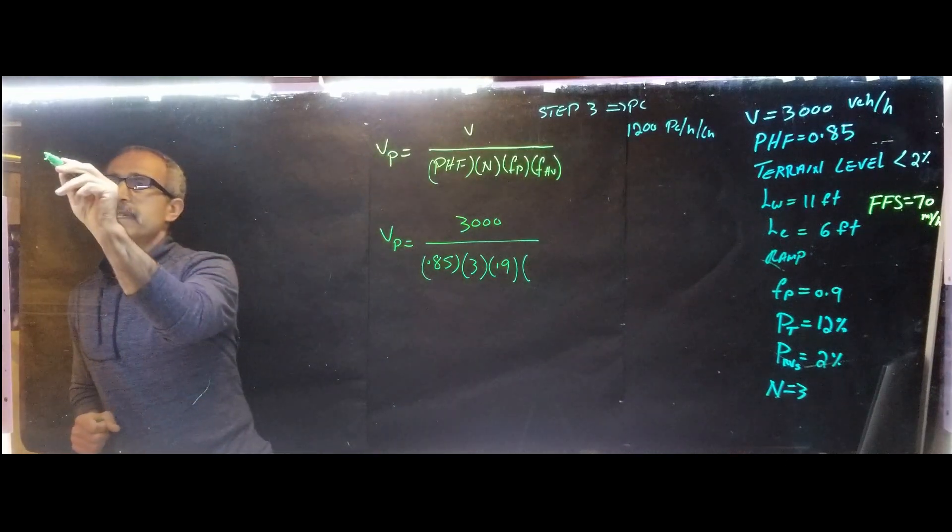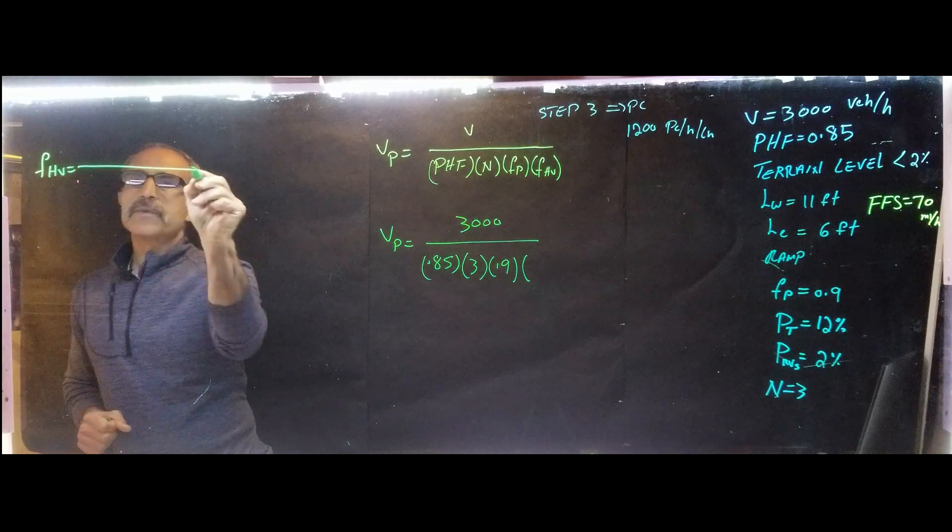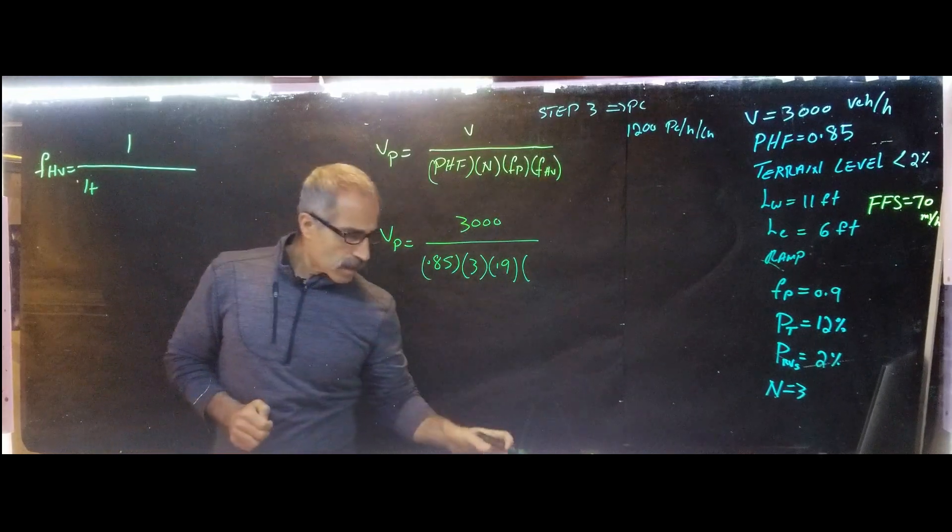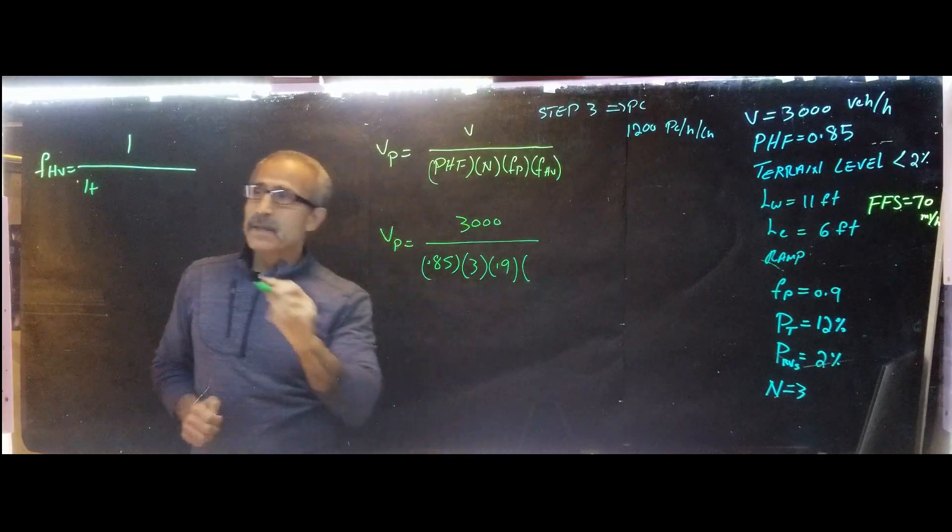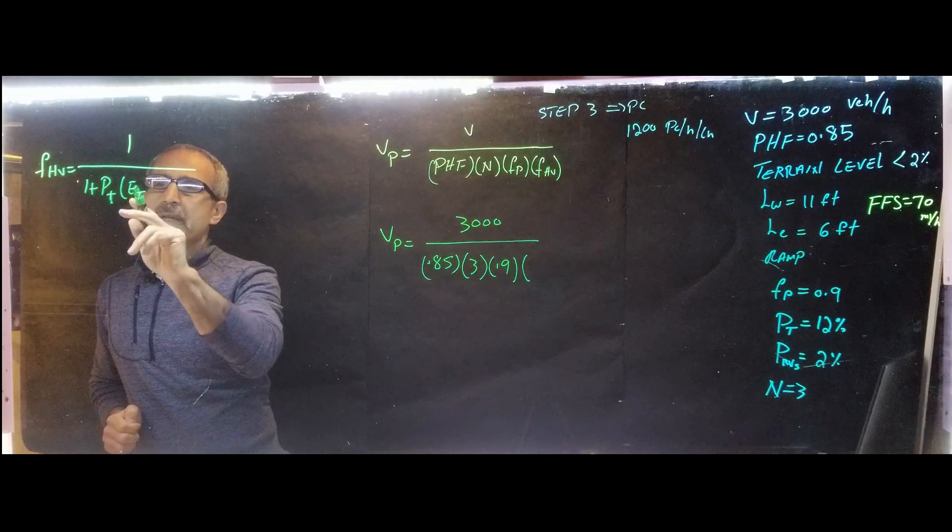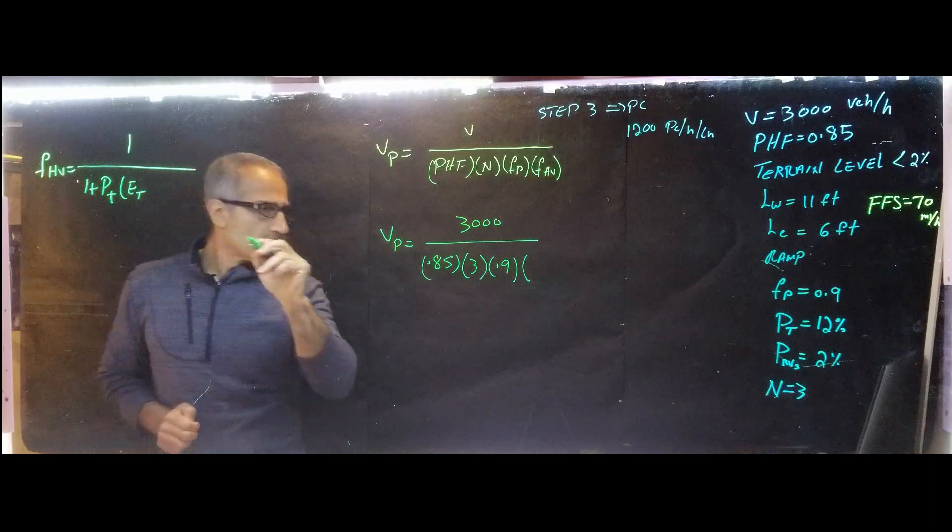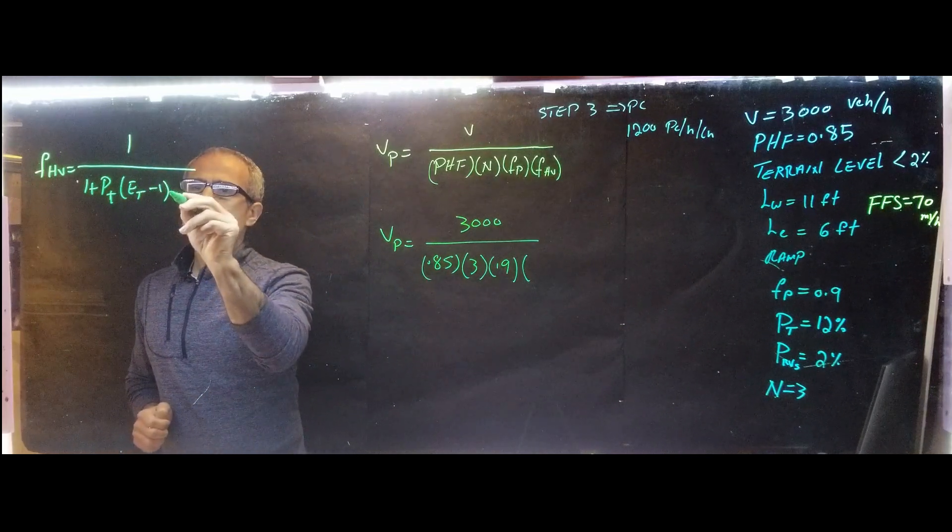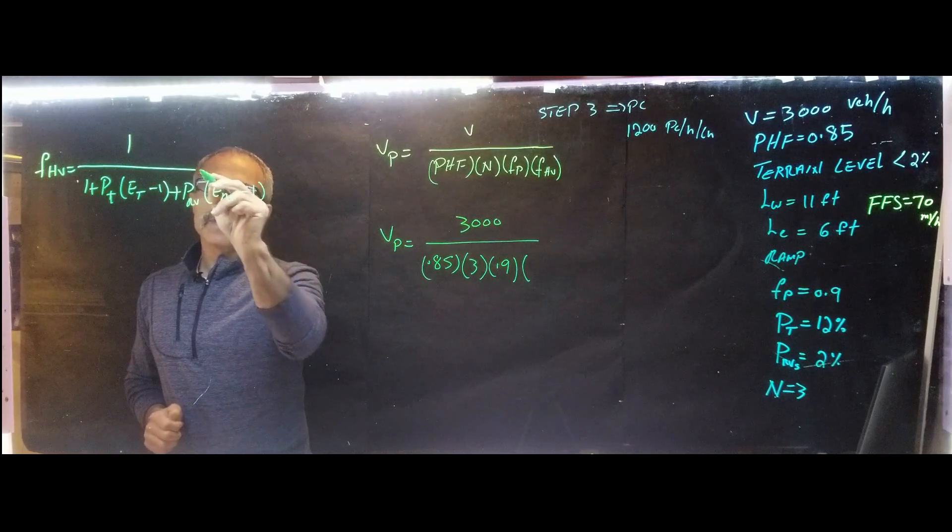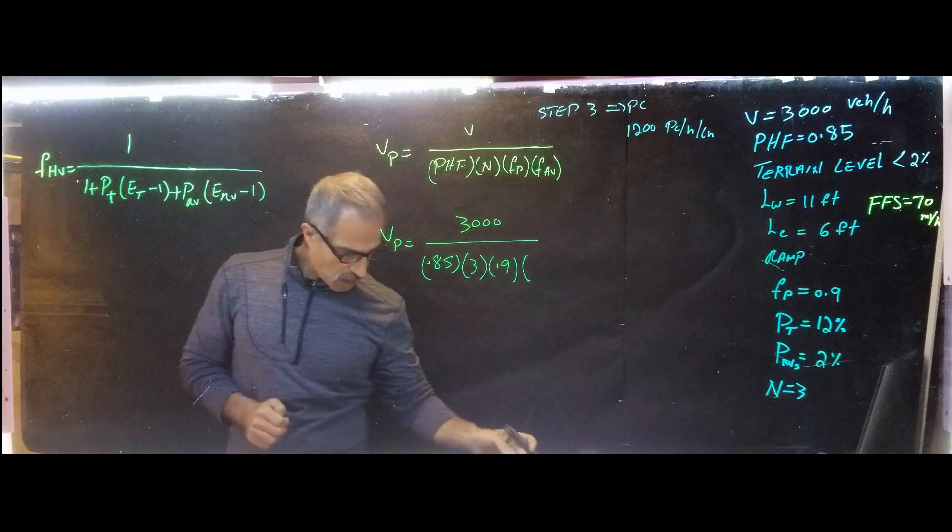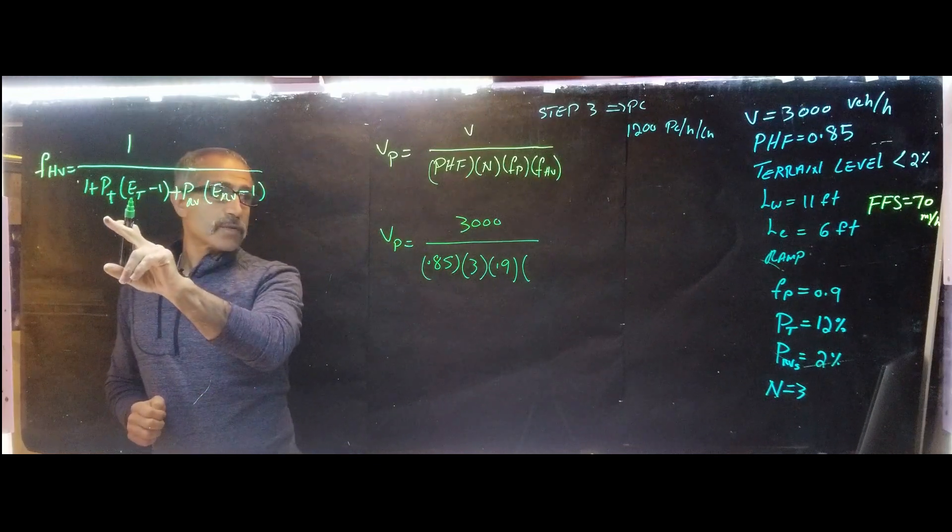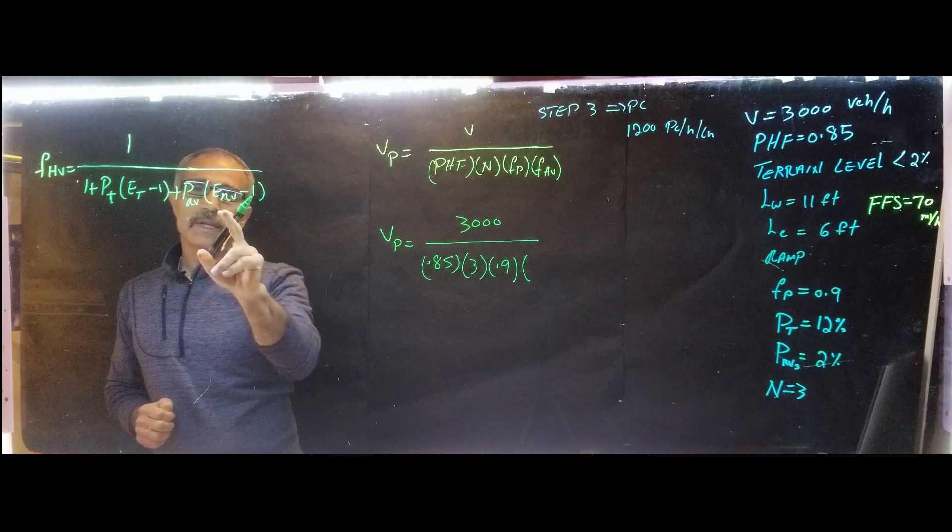And FHV, that's equal one divided by one plus PT multiplied by ET. That's PT. ET minus one, and then plus PRV multiplied by ERV minus one. I believe I got that correct. Yes. So we've got to find out. We know PT is 12 percent. PRV is 2 percent. We don't know ET and ERV. So ET and ERV is calculated from a table.